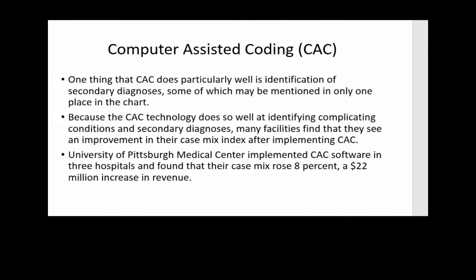One thing that computer assisted coding does particularly well is identify secondary diagnoses, because they may be mentioned in only one place in the chart and the coder may miss them, but the CAC is going to catch them. The CAC technology can identify those CCs and MCCs, which facilities find very helpful in improving their case mix — getting the most reimbursement by accurately capturing all codes. The University of Pittsburgh Medical Center found a $22 million increase in revenue by using CAC to capture morbidities and comorbidities.